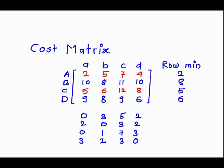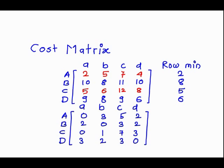This is called the matrix after row reduction. Next, we find the column minimum of each column. For the first column, the minimum is 0. For the second column, the minimum is 0. For the third column, the minimum is 3. For the fourth column, the minimum is 0.